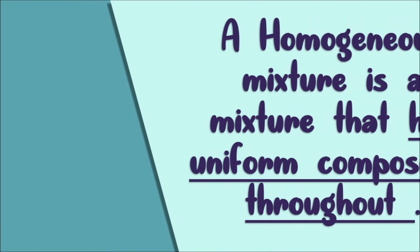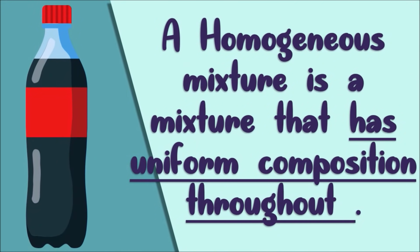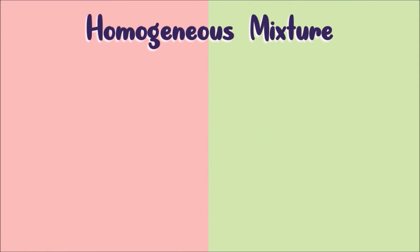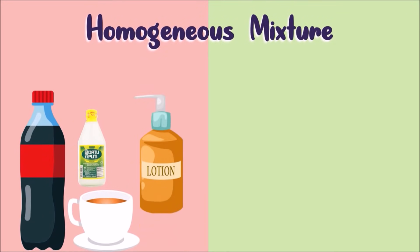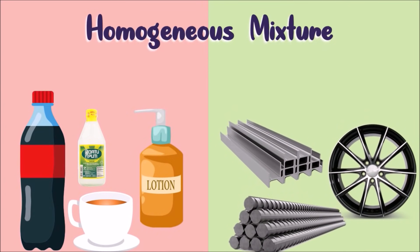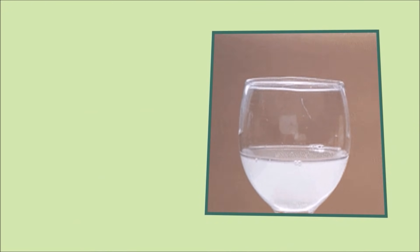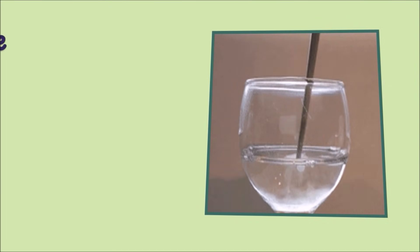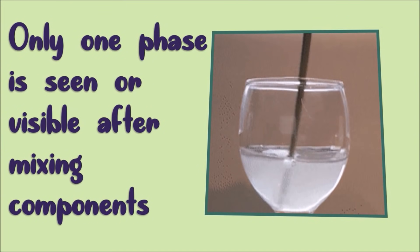A homogeneous mixture is a mixture that has a uniform composition throughout. Homogeneous mixtures could be in liquid or solid form. Only one phase is seen or visible after mixing the different components.